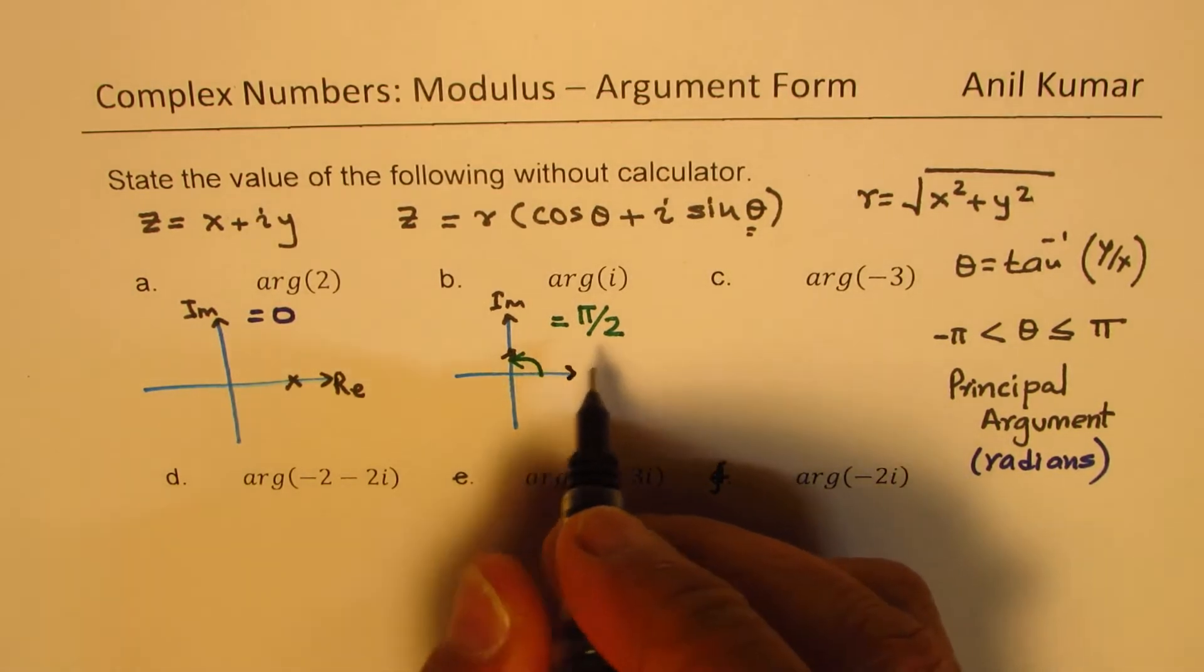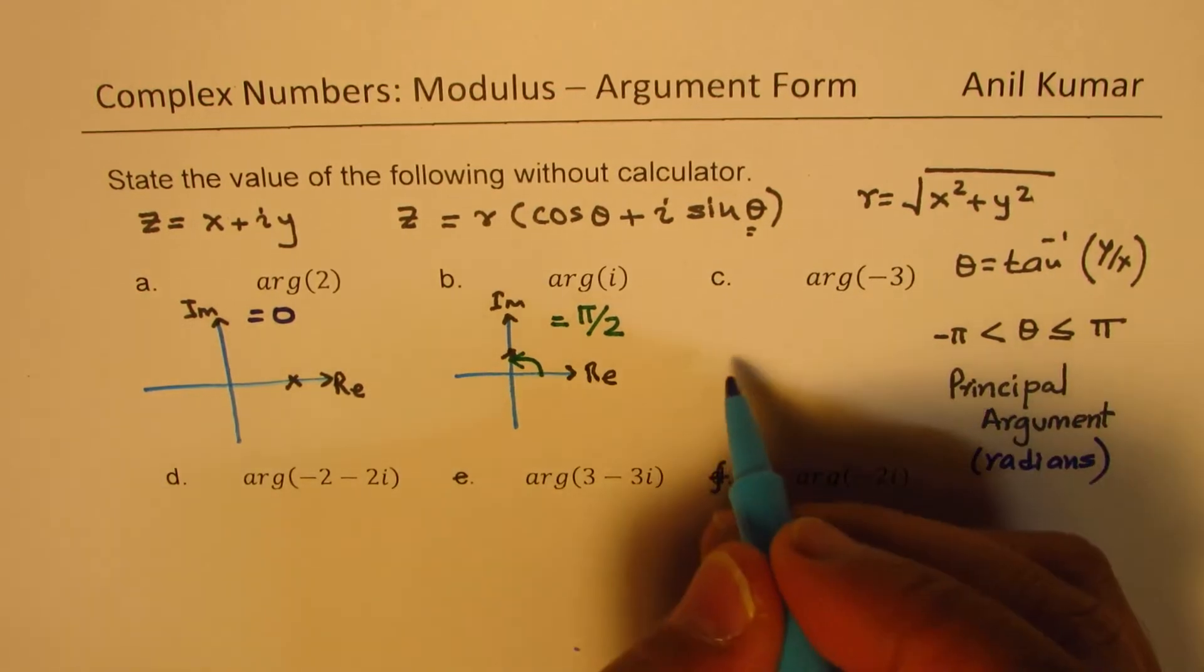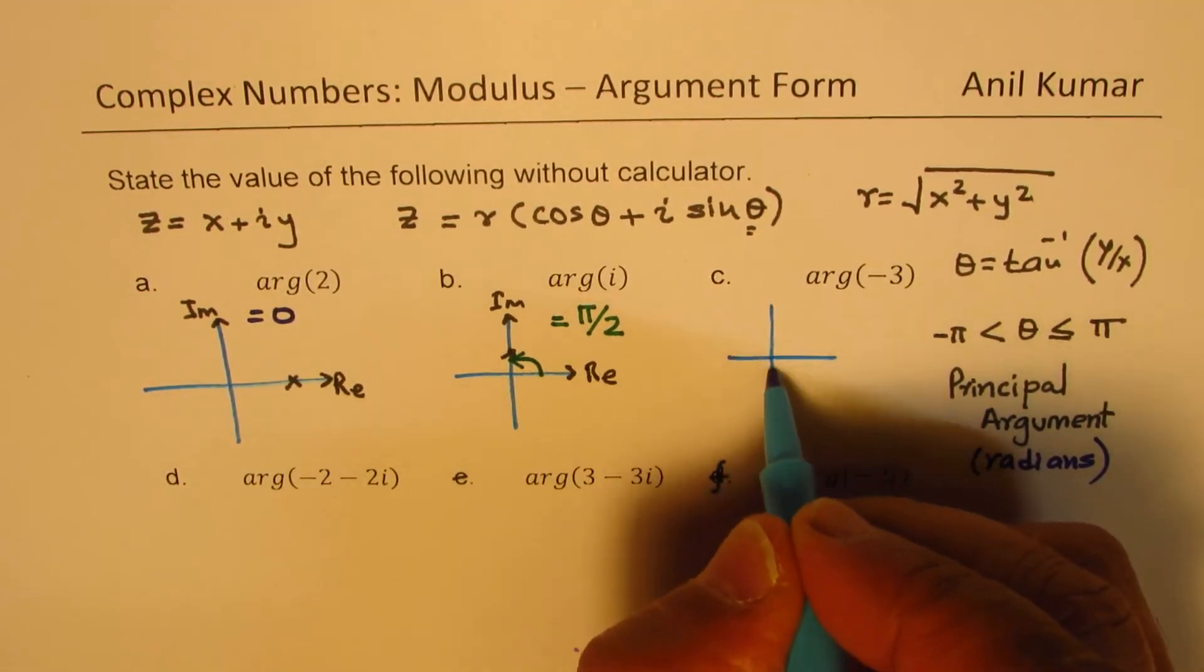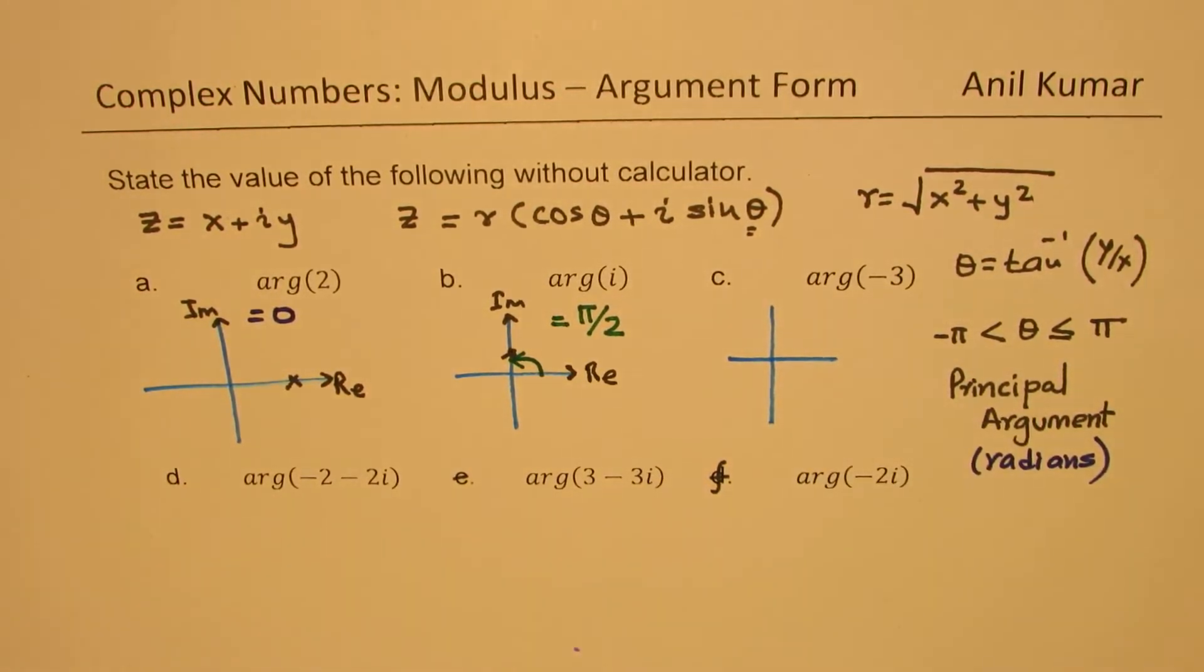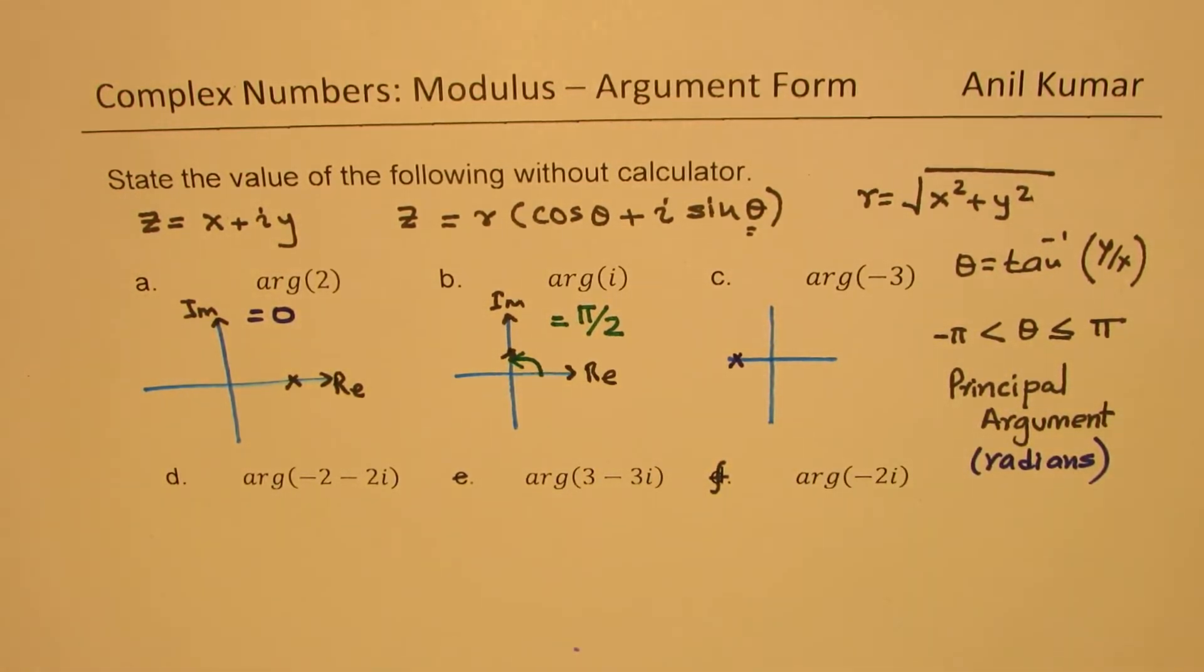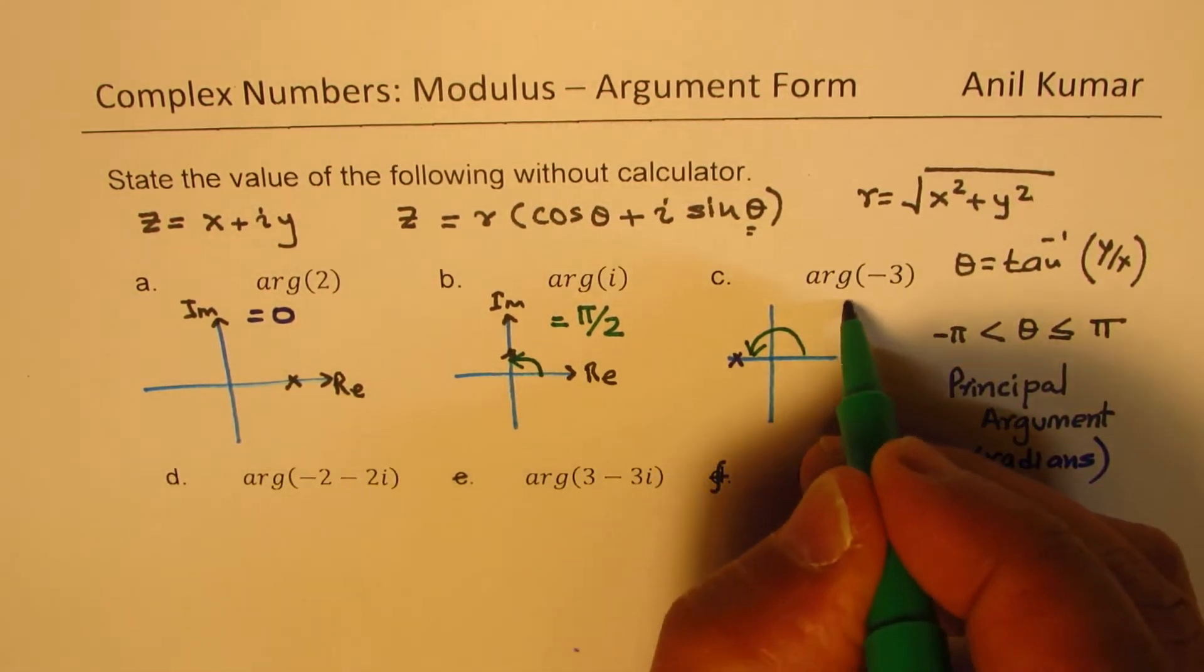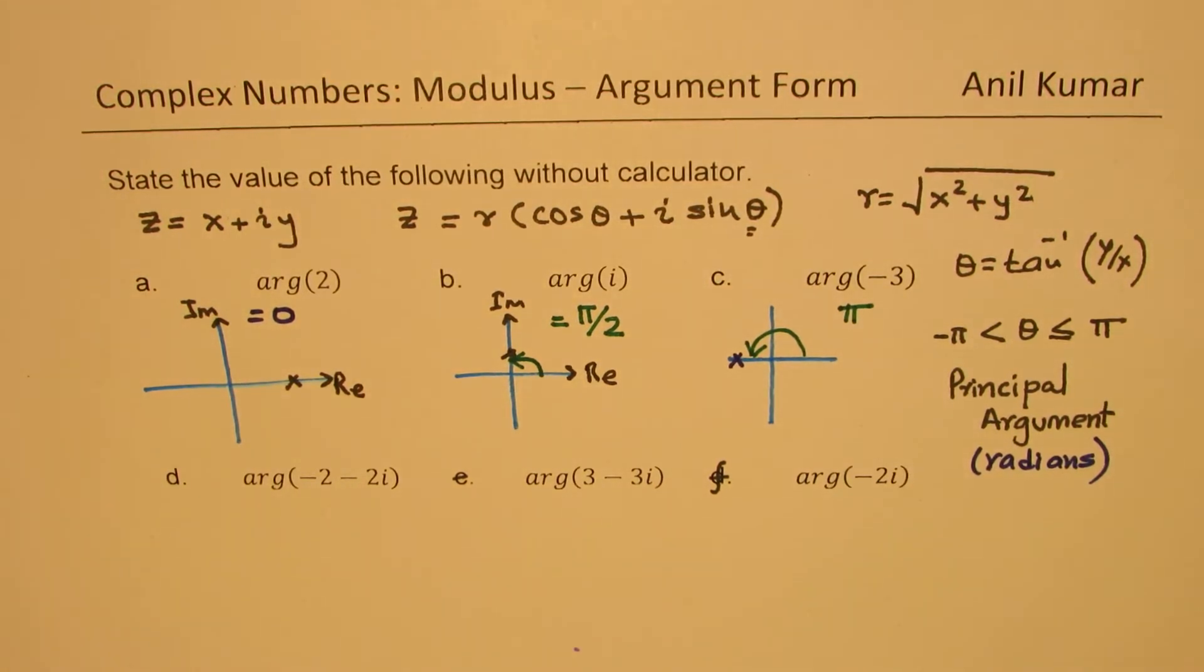Now let's look into the next one, which is argument minus 3. Now when I say minus 3, that means we are on this side. So that means that the angle is pi. So this answer should be pi. So that is how, once you place it on the plane, then you can easily see what should be the answer.